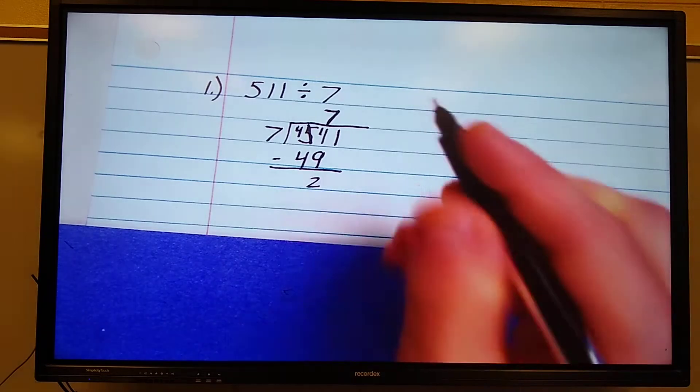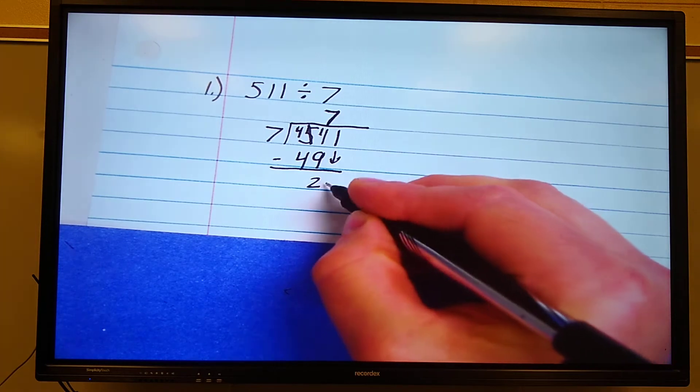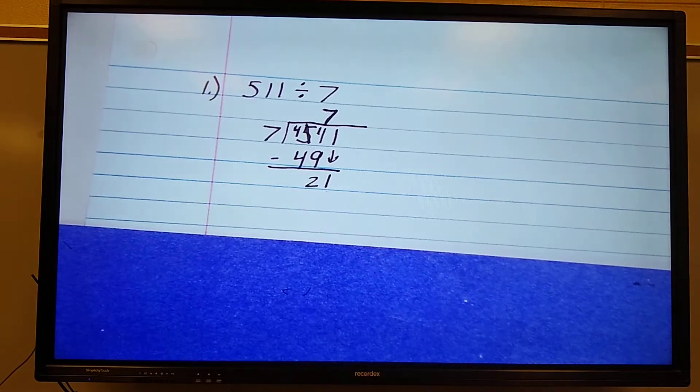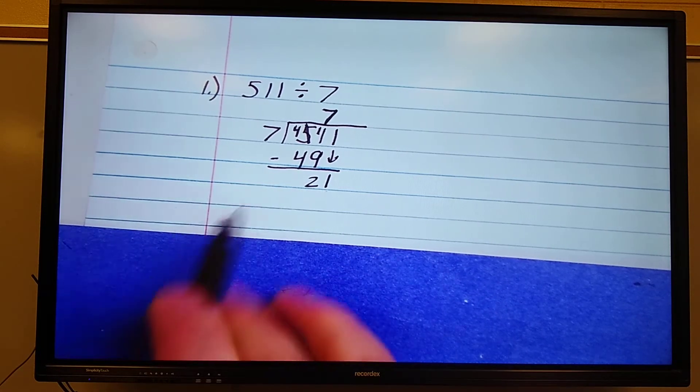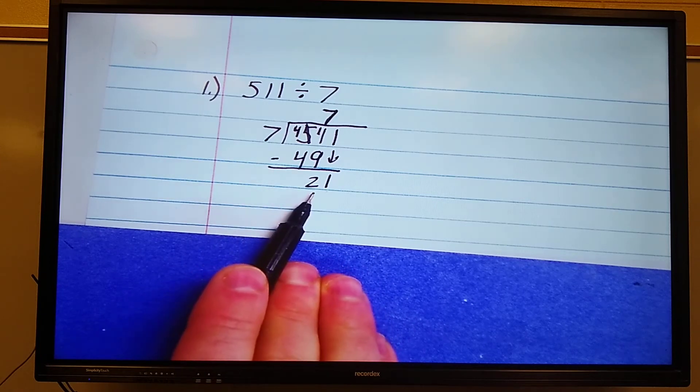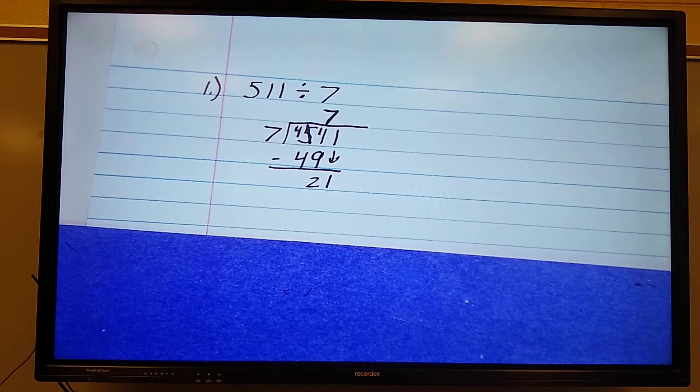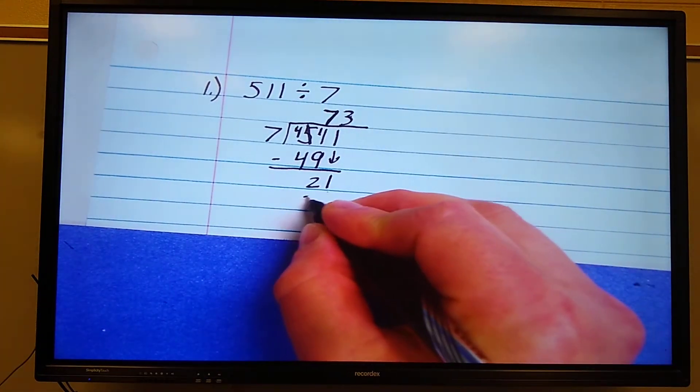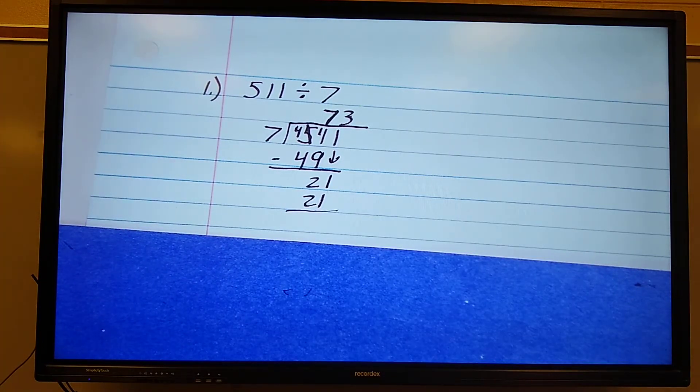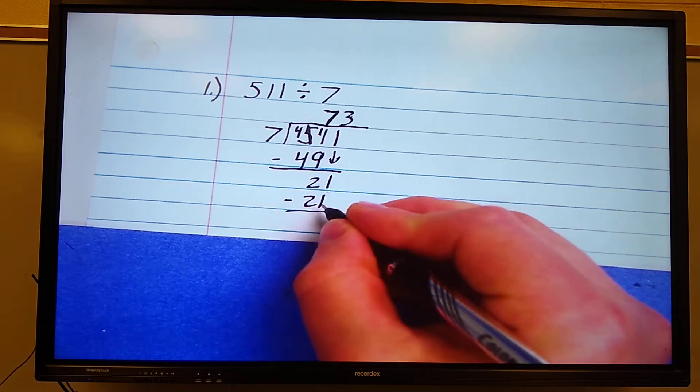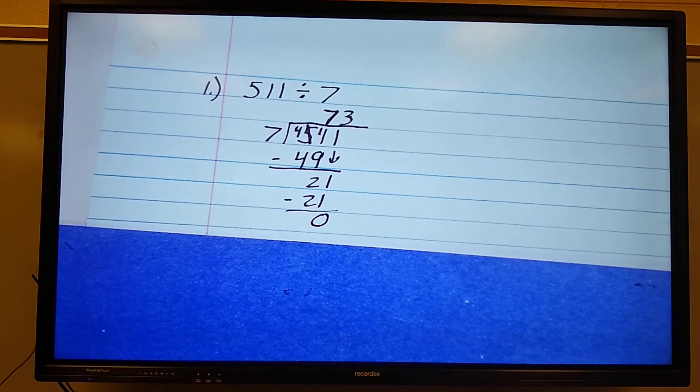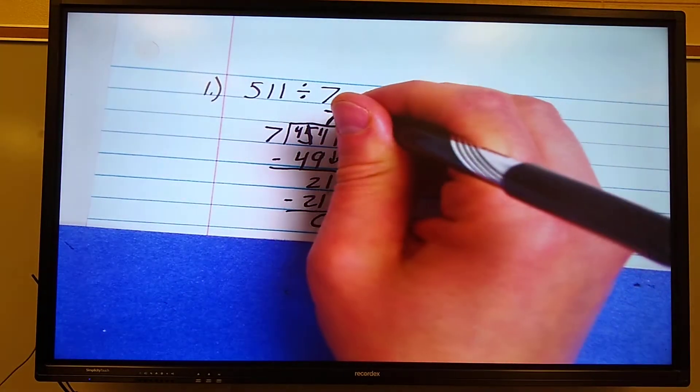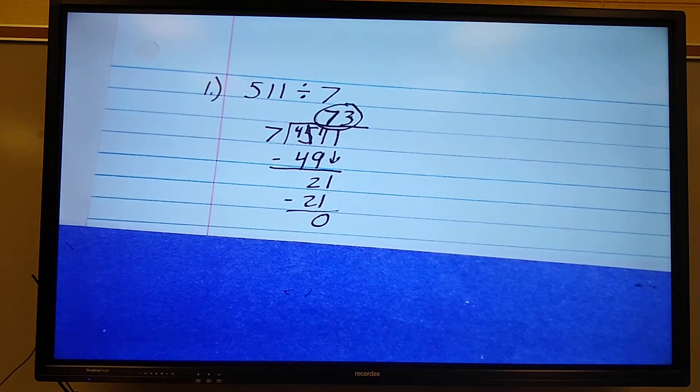Sorry about that interruption. My next step is to bring down any numbers that have not been used. So here's my 1, I'm bringing it down. Now I got to repeat. Division. 7 will go into 21 how many times without going over? And the answer is 3. 3 times 7 is 21, because my next step is to multiply. My next step is to subtract. 21 minus 21 is 0. Then my last step is to bring down, but I have nothing to bring down. So that means I'm finished. My quotient or my answer is 73.